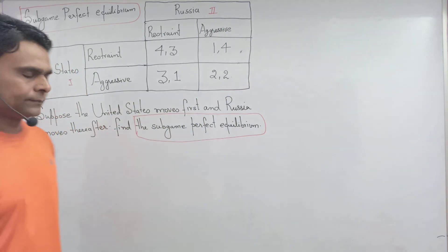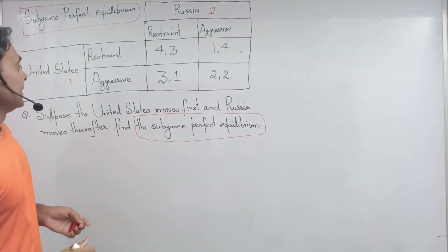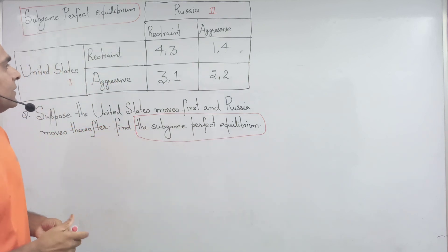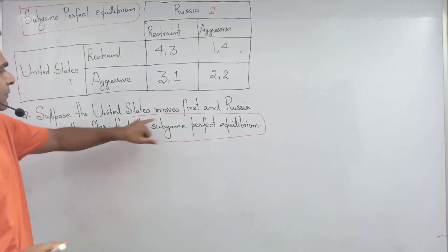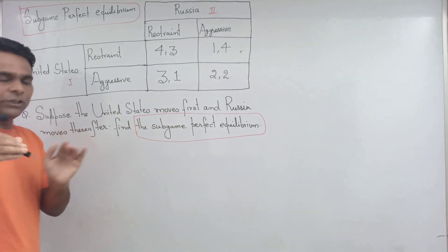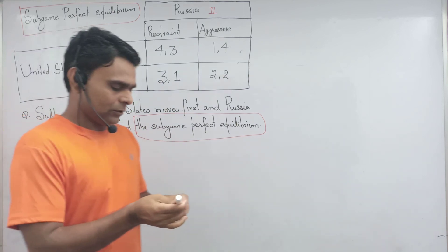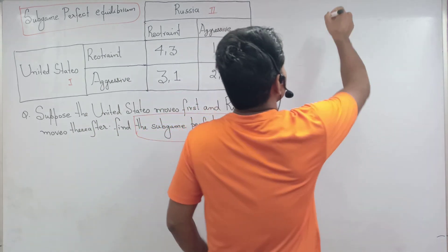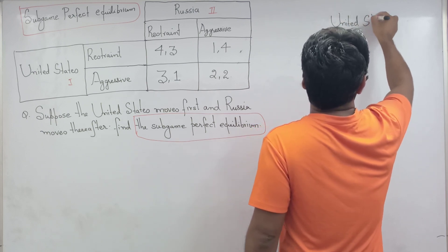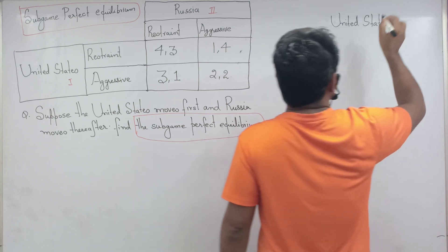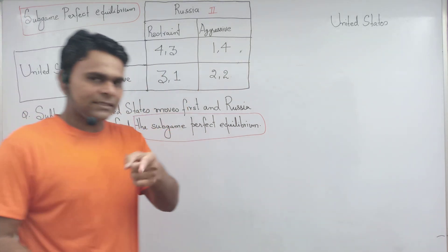In order to solve and find the sub-game perfect equilibrium, this question is converted into a game tree. Since the United States is moving first, the game tree begins with the United States. The United States has two strategies: restrain and aggressive.